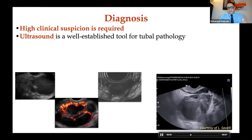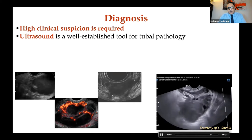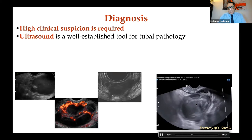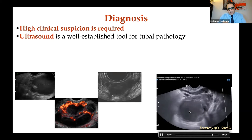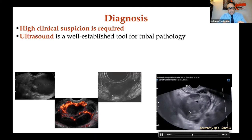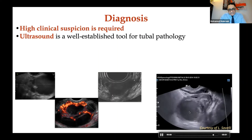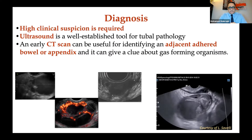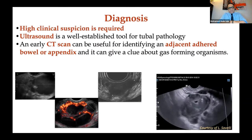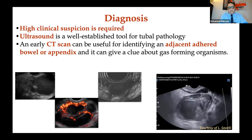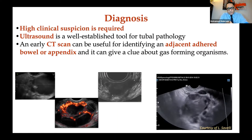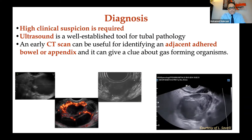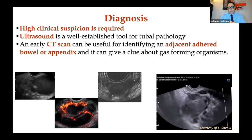Ultrasound can show whether an abscess cavity is fluid-filled or already coagulated, which determines the feasibility of image-guided drainage. CT scan is very useful if available — my last case operated at 2 a.m. had a CT scan that clearly showed the abscess was completely fused with the bowel and appendix. This led me to call a colorectal surgeon colleague to assist, and I'll show you why that can be very important.